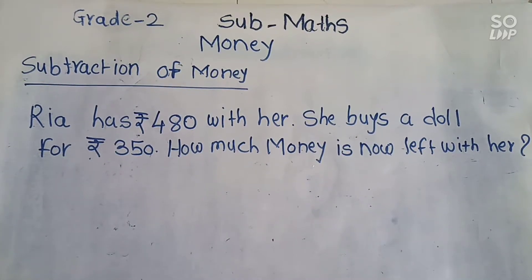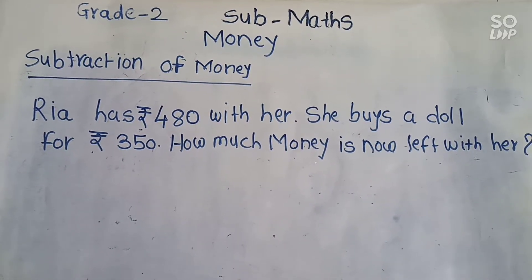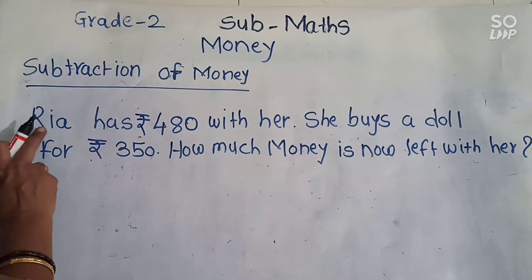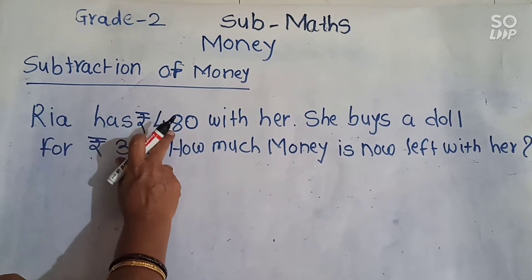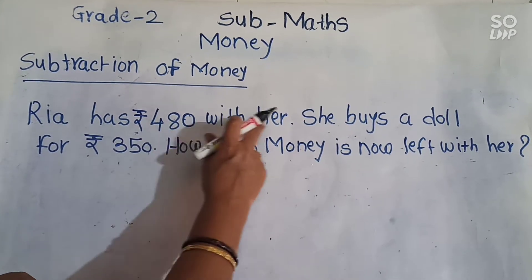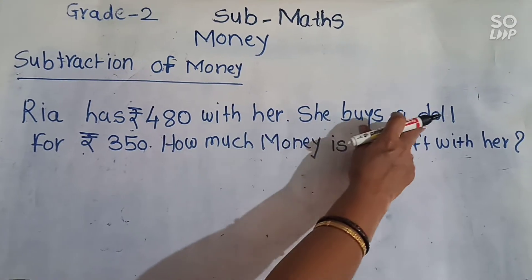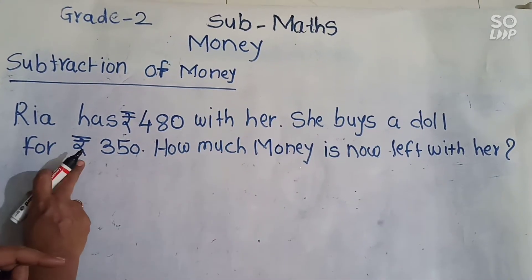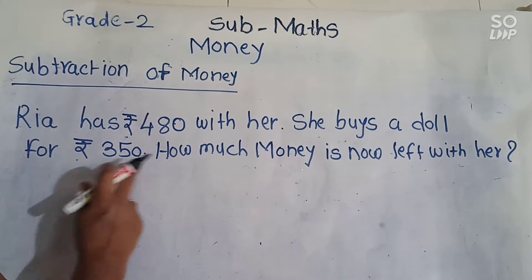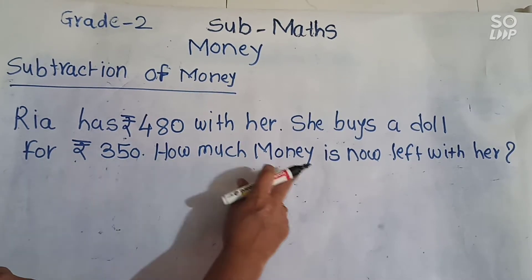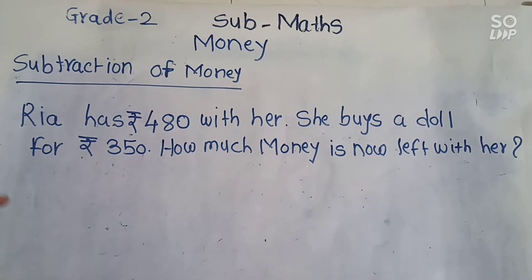Now we will see subtraction of money. Look here. Rhea has rupees 480 with her. She buys a doll for rupees 350. How much money is now left with her?